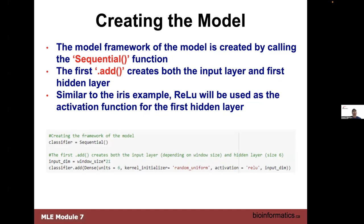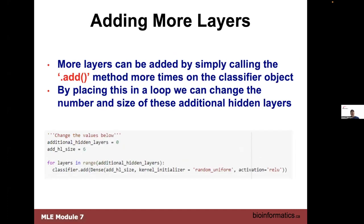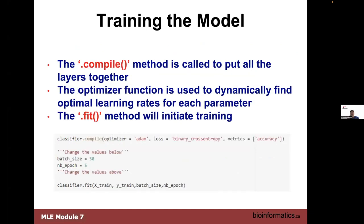The add method gives us an input layer and a hidden layer. With the Iris model, we're using the ReLU function for activation — not sigmoid or softmax — and that's again the same code. We're using 6 units, 6 layers, just as we did for the Iris one. We can add more layers if we want but we've chosen 6. Same as with the Iris neural net, we use compile to put the layers together, we have an optimizer function to choose and optimize the learning rates for each parameter, and then the fit method to initiate training.